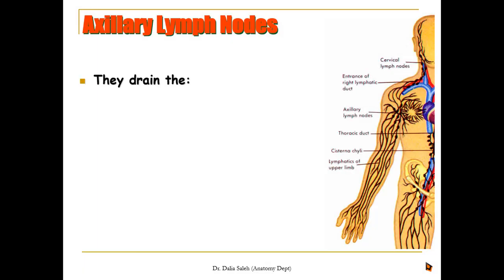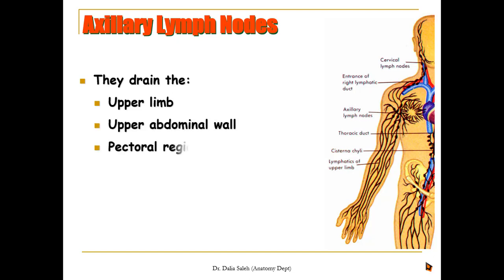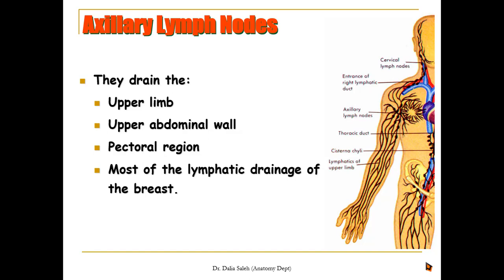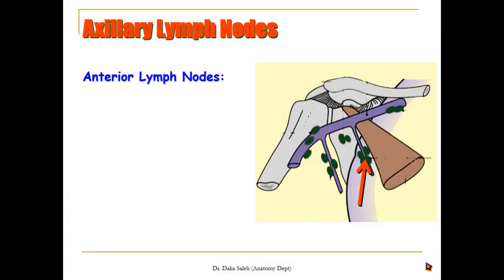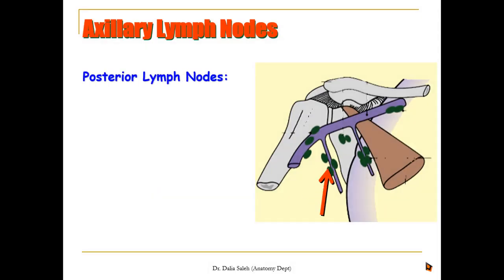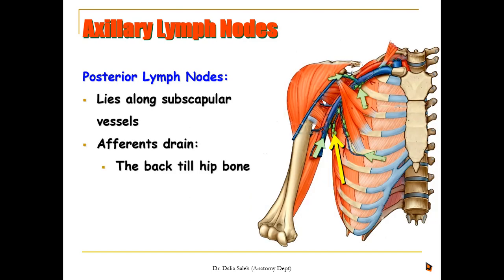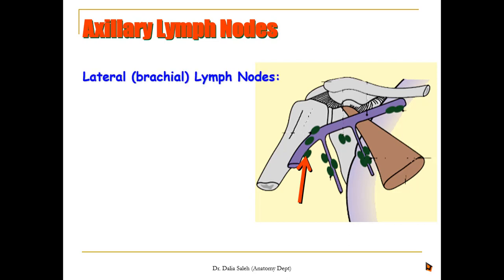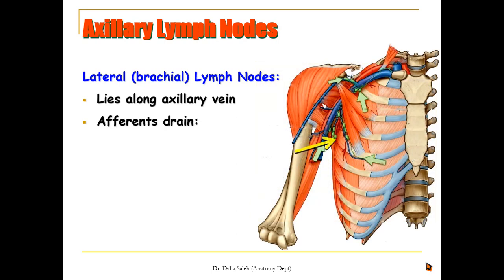The axillary lymph nodes drain the upper limb, upper abdominal wall, pectoral region, and most of the lymphatic drainage of the breast. They are arranged in five groups. The anterior or pectoral group lies along the lateral thoracic vessels; their afferents drain the pectoral region, breast, and upper abdominal wall. The posterior or subscapular group lies along the subscapular vessels; their afferents drain the back down to the hip bone. The lateral or brachial axillary lymph nodes lie along the axillary vein; their afferents drain the upper limb.